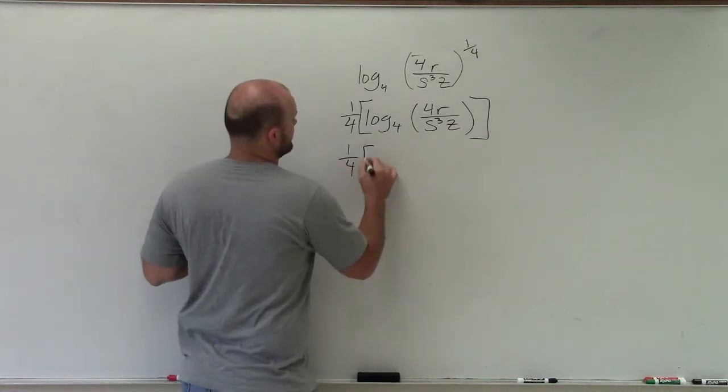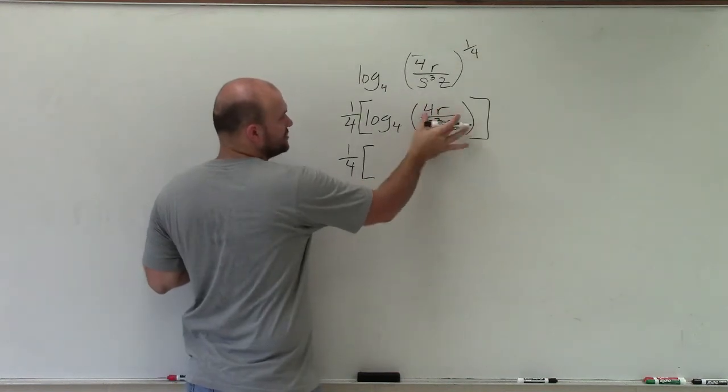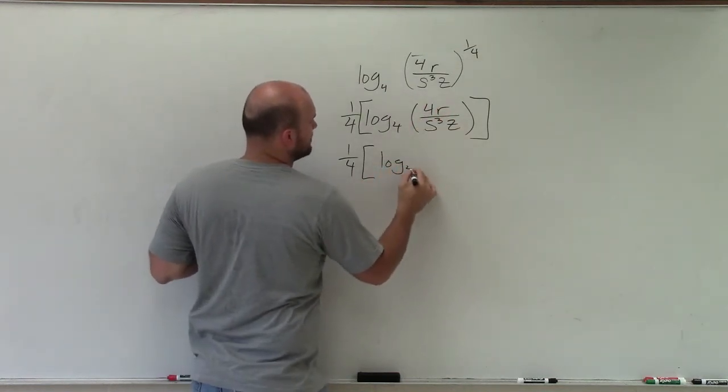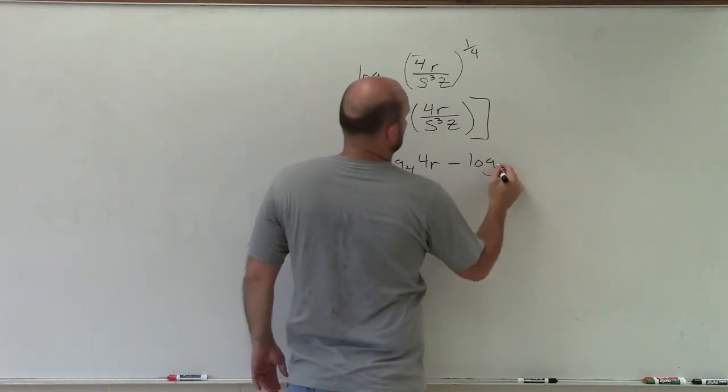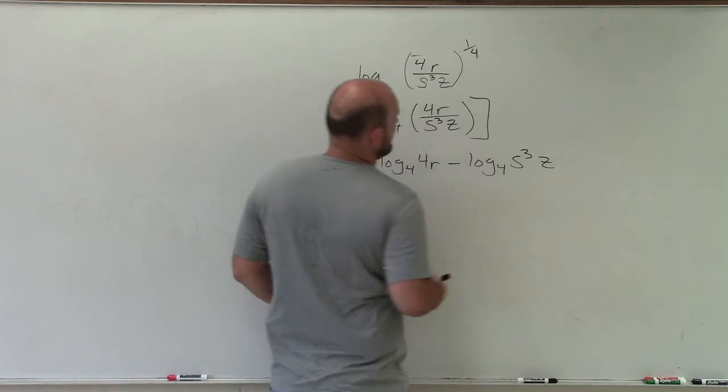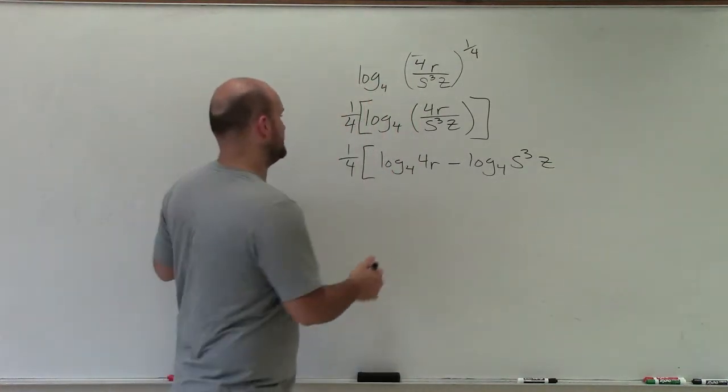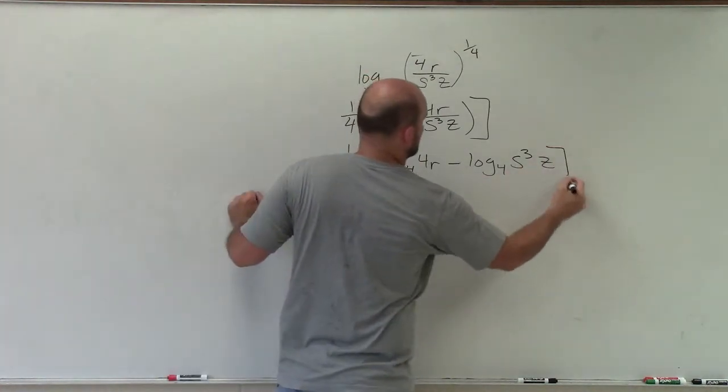So now I have 1 fourth. And I'm just going to break this up into two separate logs. So log base 4 of 4r minus log base 4 of s cubed z. Then by expanding each one of these logarithms, end of my brackets.